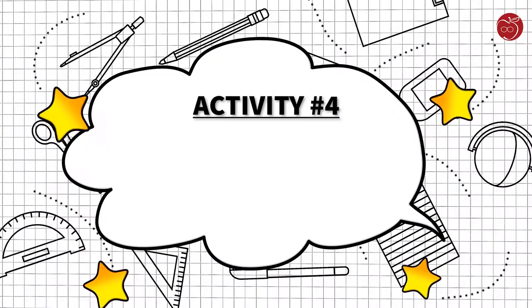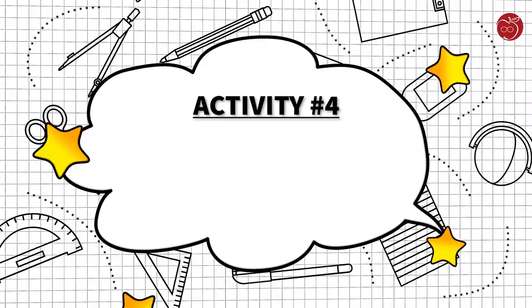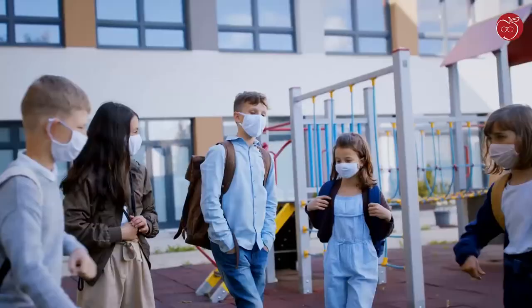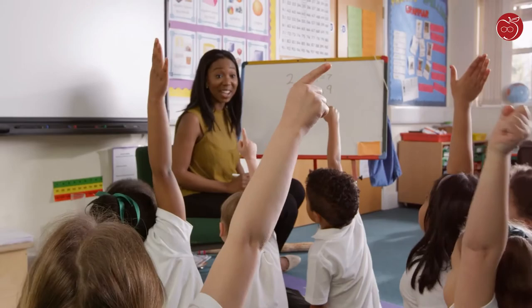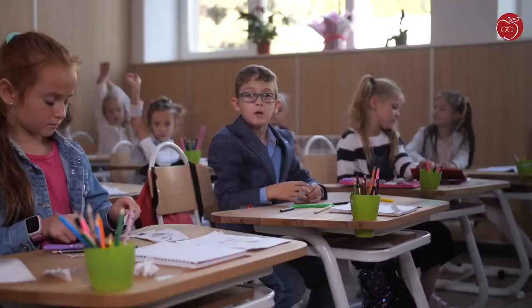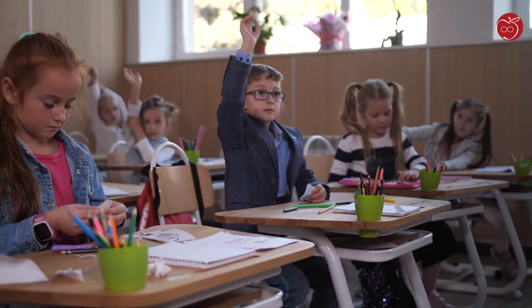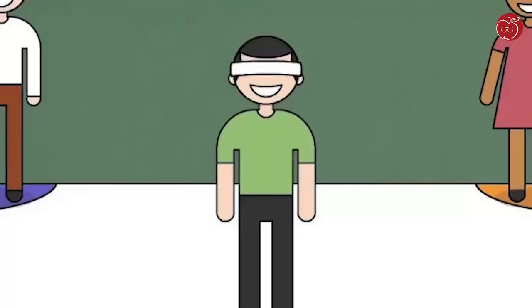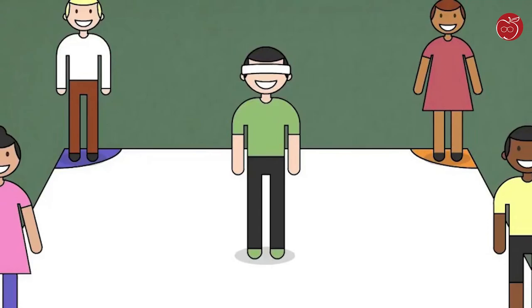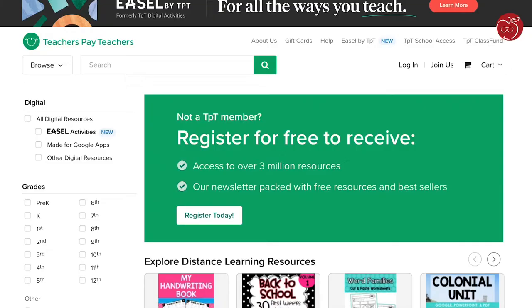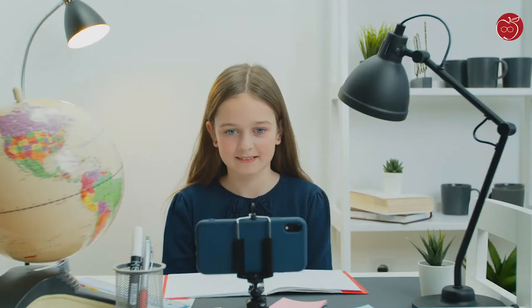Activity number four: icebreakers. Icebreakers traditionally are done at the beginning of the school year. However, I find that you can really do these types of activities throughout the school year, because there are always things you can learn about your students and your students can learn about one another that can't be covered just from a beginning-of-year activity. Some things that come to mind are 'Would You Rather' activities or corner games. These can be found from a simple Google search or on Teachers Pay Teachers, where several teacher authors have created activities.